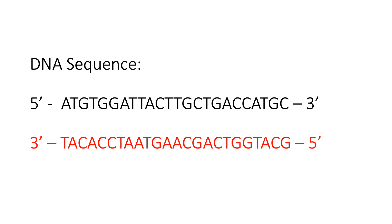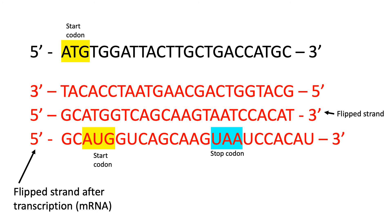We are given a protein that is 4 amino acids long and is formed from the DNA sequence shown, formed in vivo. First, we need to determine the template strand and the coding strand. To do this, we flip the bottom strand to read 5' to 3'. Now we look for the start codon.